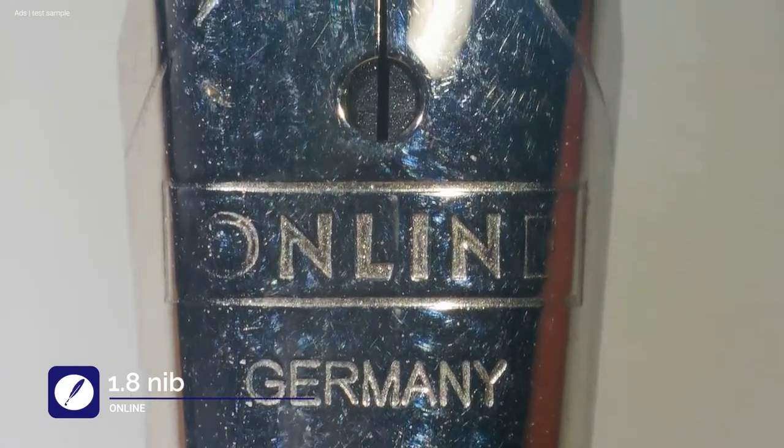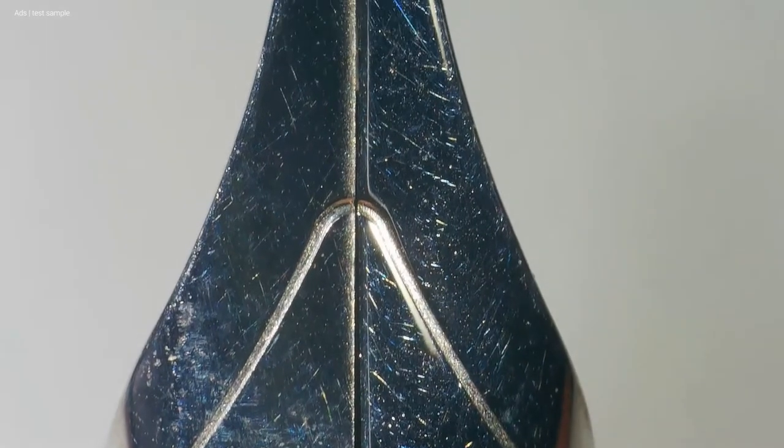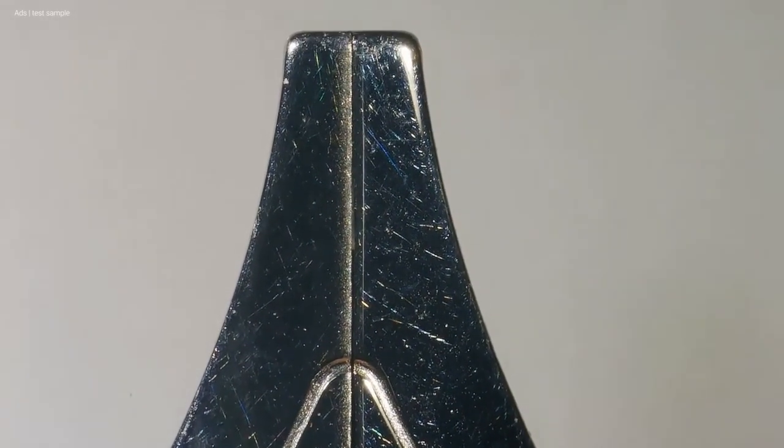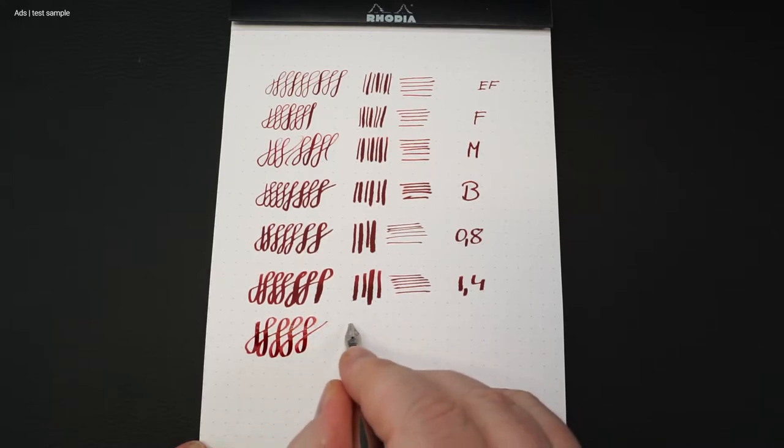And last but not least the 1.8. This is already very wide. Here the stub behavior can be seen very nicely.